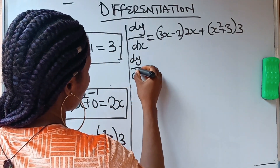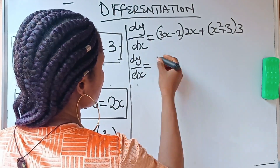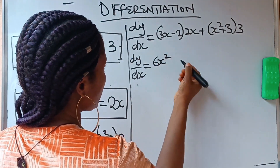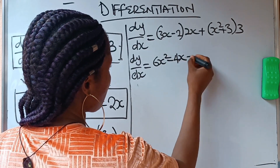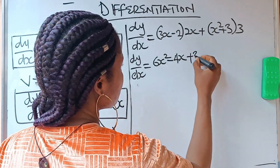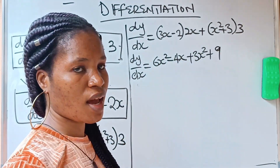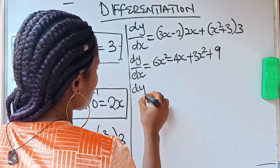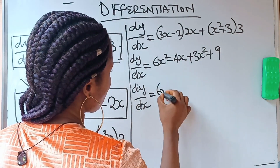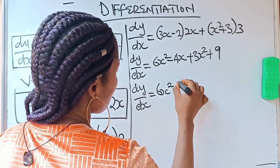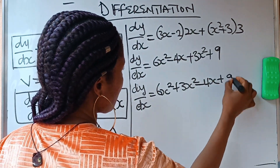We are going to open the brackets. 2x times 3x gives 6x squared. 2x times minus 2 gives minus 4x. Plus 3 times x squared gives 3x squared. Plus 3 times 3 gives 9. Collecting like terms: dy/dx equals 6x squared plus 3x squared minus 4x plus 9.